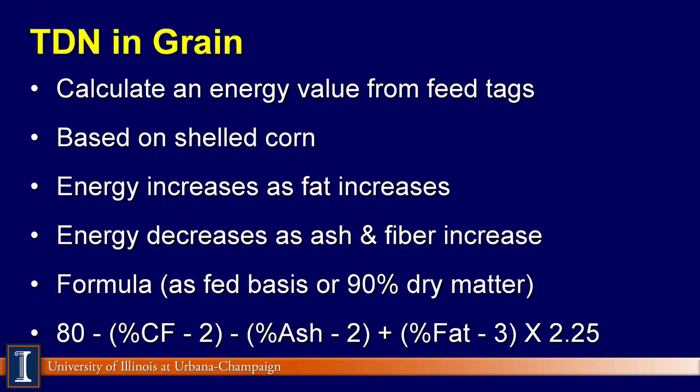One common question is: what's the energy content of a grain mix I may buy from the local elevator or a commercial company? Here is a Hutchins thumb rule to calculate TDN in a grain mix on an as-fed basis. It is based on the energy value of corn. The concept is that as energy increases, fat content goes up. We should also understand that energy content decreases as ash increases — that's mineral, that's rock, and there is no carbon in rock, therefore no energy. And as fiber increases, that decreases digestibility and decreases energy content.